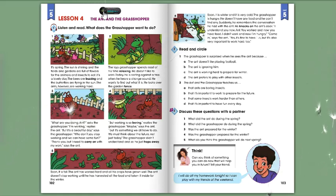The grasshopper didn't understand, and so he just hops away. Soon it is fall. The ant has worked hard, and all his crops have grown well.